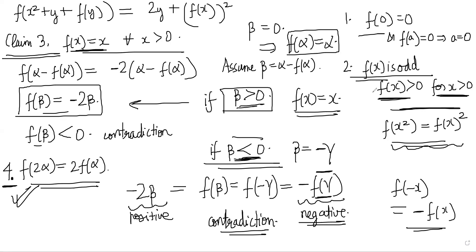So f(x) = x is the only solution. The proof used three claims, each established by strategic substitution of carefully chosen values. In an Olympiad, you'll need to do this faster, but the key principle is always: substitute values that simplify your expressions and use every piece of information gathered in previous steps. We'll continue with more functional equation problems in the next video.